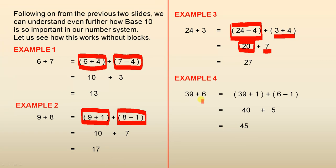39 plus 6. Now, how do we make some groups of 10? Well, 39 plus 1. That gives us 40. They're definitely groups of 10, aren't they? Now, so we added 1 here. So where did we get the 1 from? Well, we just took it away from the 6. 39 plus 1 gives us 40. 6 minus 1 gives us 5. 40 plus 5 equals 45.